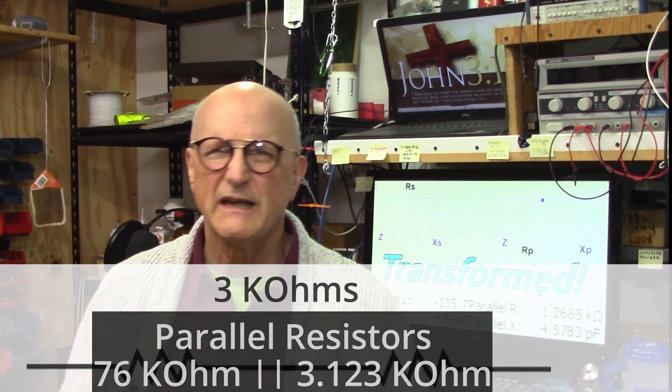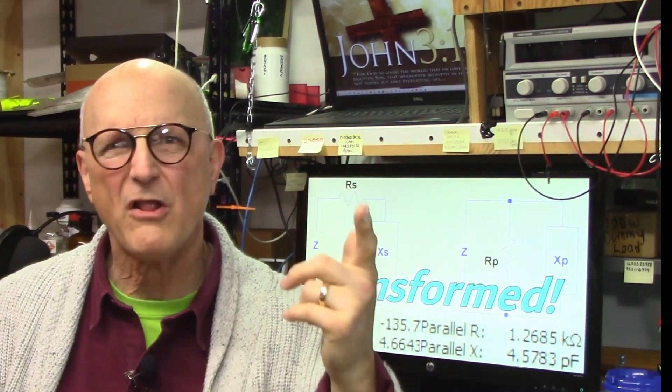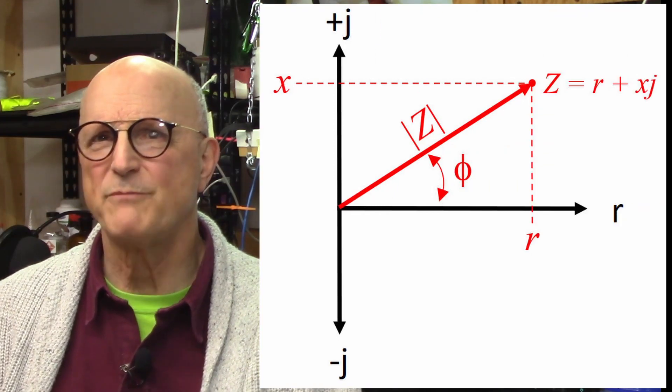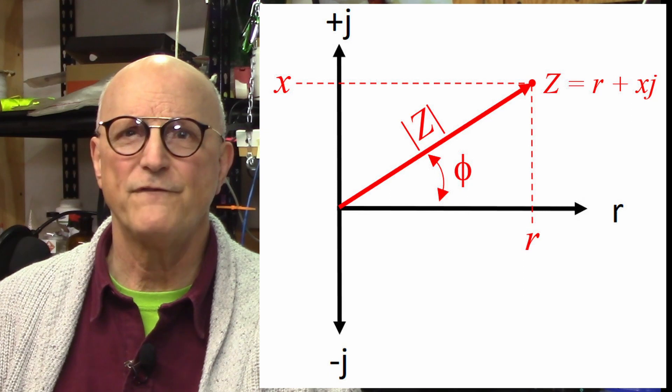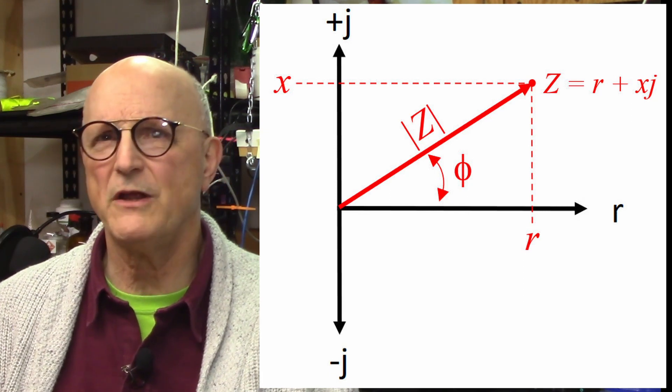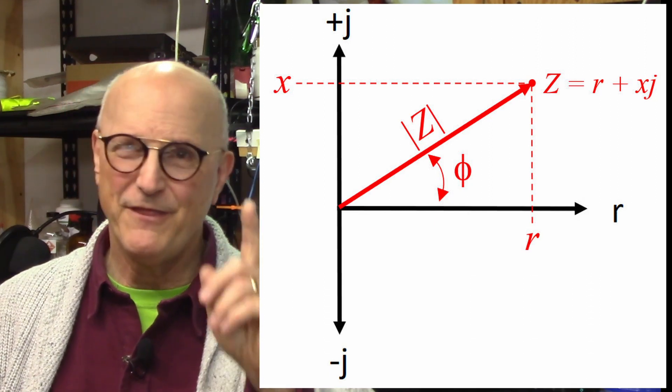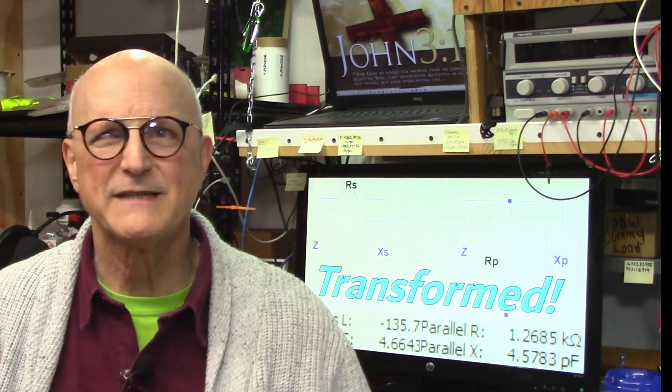That being the case, how do they come up with two definitive values for parallel R and parallel X components? Unlike the purely resistive example, the impedance has both magnitude and phase associated with it. The magnitude and phase of the parallel equivalent components must be the same as the series components and this is what dictates the exact value of our parallel components.